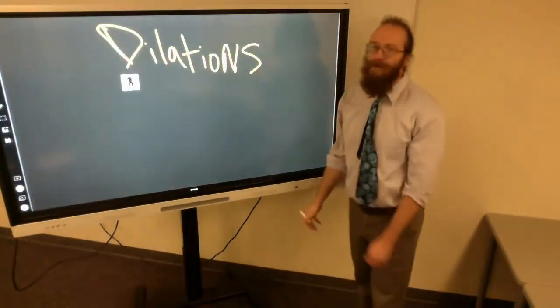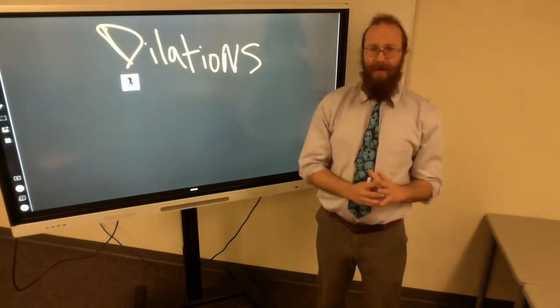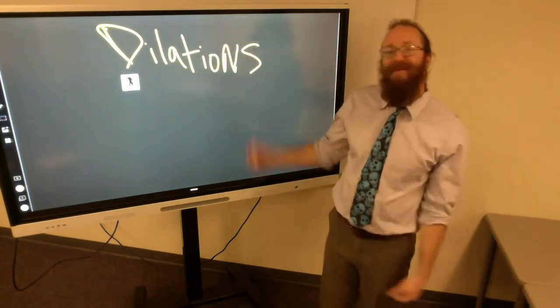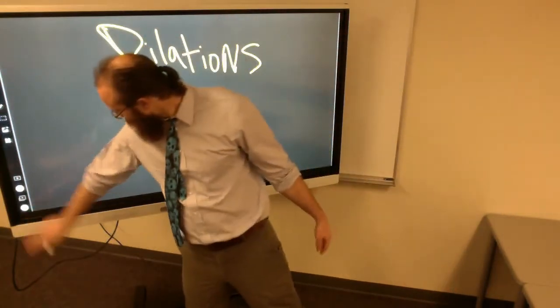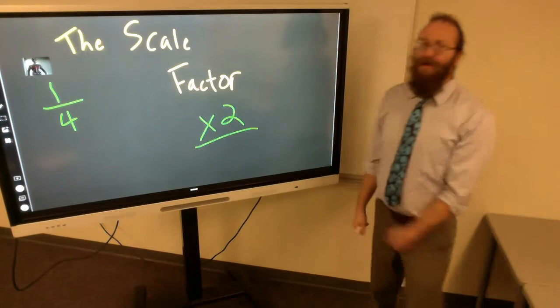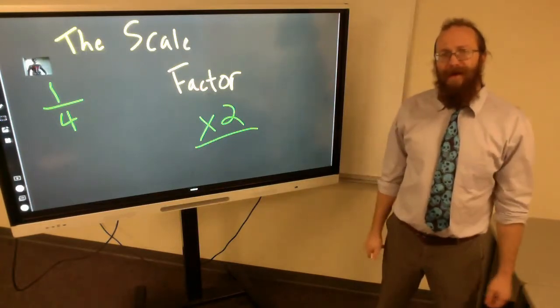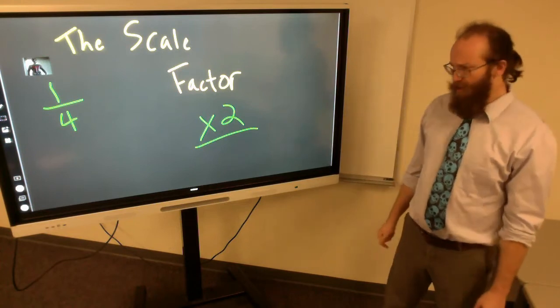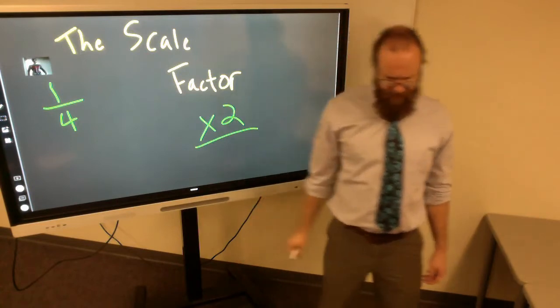Our next words were dilations, which is making something bigger or smaller. Bigger or smaller, same thing though, right? Same angles, same shapes, same everything else. And the last word that we talked about was the scale factor. So how much bigger or smaller are you making a thing? And that is determined by your scale factor.